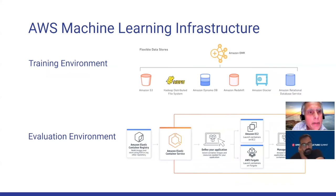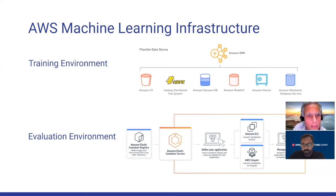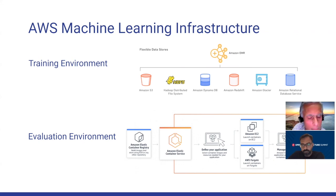AWS has machine learning infrastructure with MapReduce via EMR. Amazon offers various storage options: object storage, file storage, Hadoop for big data, DynamoDB for key-value stores, relational data services, and analytics and BI tools like Redshift and Glacier. For the evaluation environment, the focus is on execution and deployment, using Elastic Container Service, Amazon EC2, and Fargate for serverless and lambda-style services.